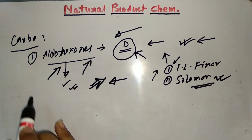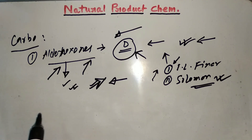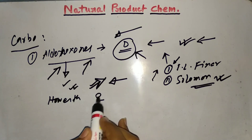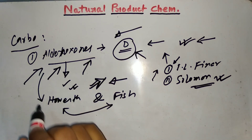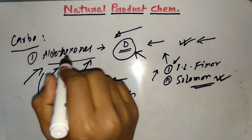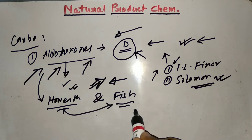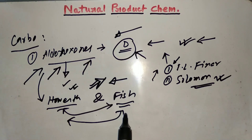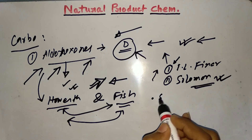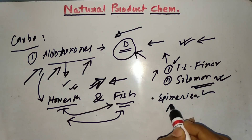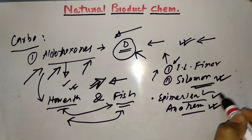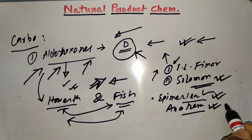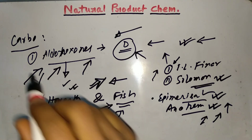Next topic from carbohydrates is different projections — that is Haworth and Fisher — and how to interconvert between them. For example, take an aldohexose and try to convert it to Haworth projection from Fisher projection of the same aldohexose, or the opposite. They may ask some questions regarding this. Next important topic is epimerization, and the important definition of anomer — what is an anomer and what is epimerization or an epimer. Just know the definitions of these things and you will definitely be able to answer those types of questions from carbohydrate.